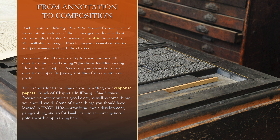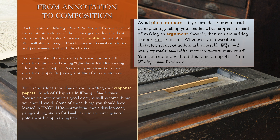Your annotations should guide you in writing your response papers. Much of chapter one in Writing About Literature focuses on how to write a good essay, as well as some things you should avoid — pre-writing, thesis development, paragraph development, and so forth. Avoid writing plot summary. If you are describing instead of explaining — telling your reader what happens instead of making an argument about it — then you are writing a report, not criticism. Whenever you describe a character, scene, or action, ask yourself: why am I telling my reader about this? How is it relevant to my thesis?